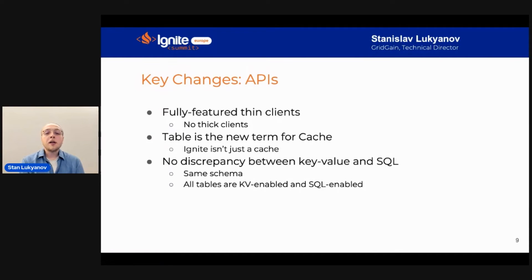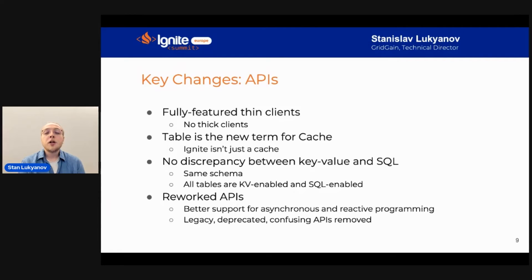One of the big goals is to remove discrepancies between key-value and SQL in Ignite 3, one of which is introducing SQL transactions. Ignite 3 also changes the schema management approach so that SQL and key-value work with the same schema, making it generally easier to interoperate between the two. Ignite 3 also redesigns various APIs to remove legacy stuff and support modern approaches such as asynchronous and reactive programming, making APIs easier to use and more friendly to new users.